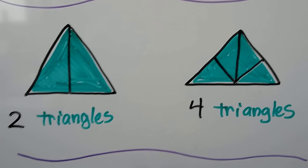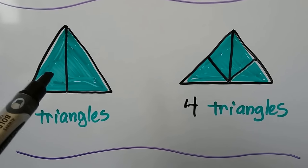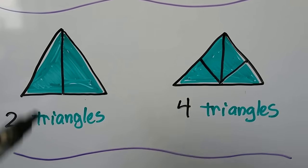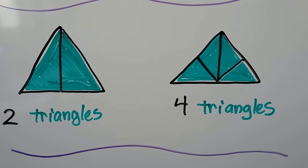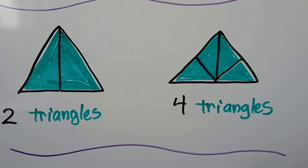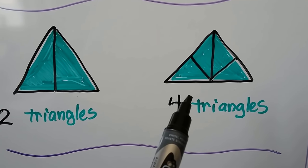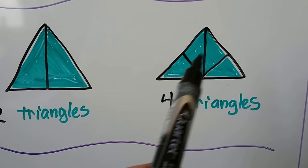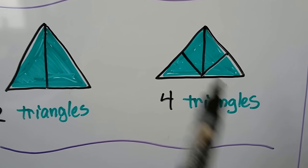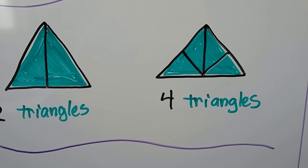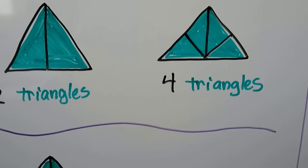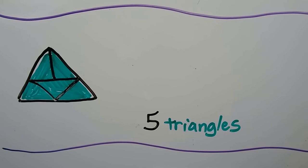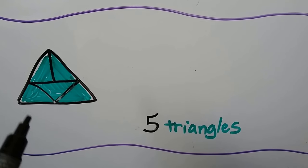We can cut a triangle into two parts — we can see a triangle here and a triangle here. We can draw lines to show four triangles inside of a triangle.